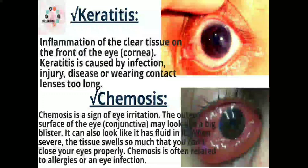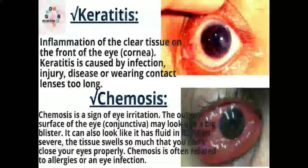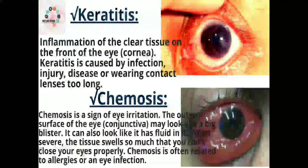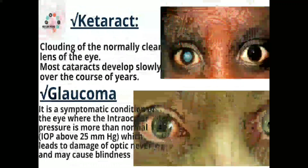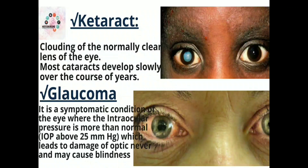Next is chemosis, also called a blister-like condition. It is a sign of eye irritation where the outer surface of the eye — the conjunctiva — may look like a big blister and can appear to have fluid in it. When severe, the tissue swells so much that you cannot close your eyes properly. Chemosis is often related to allergies or an eye infection.